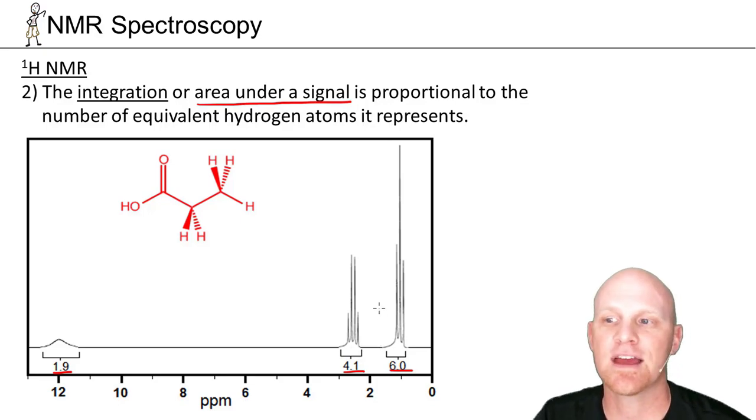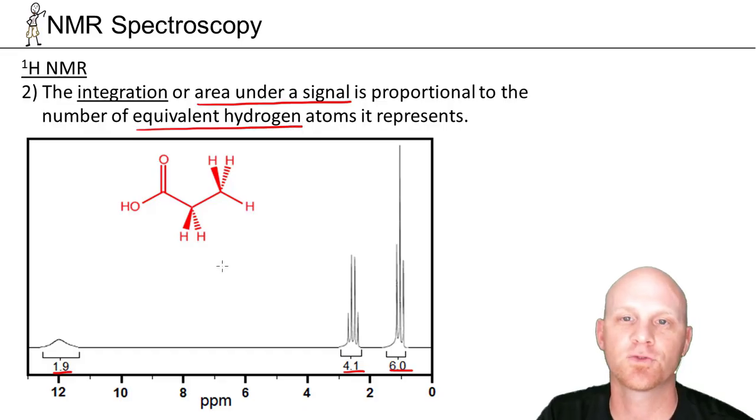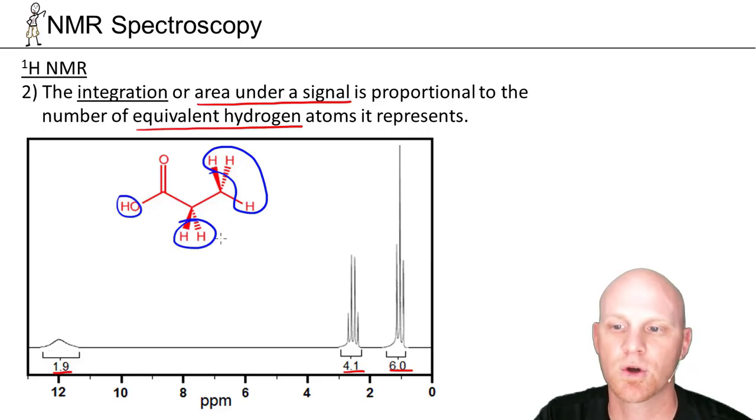The idea is that the area under the signal is proportional to the number of equivalent hydrogens that it's representing. Remember, we got three signals because we have three hydrogen environments. Those are equivalent, those are equivalent, those are equivalent.